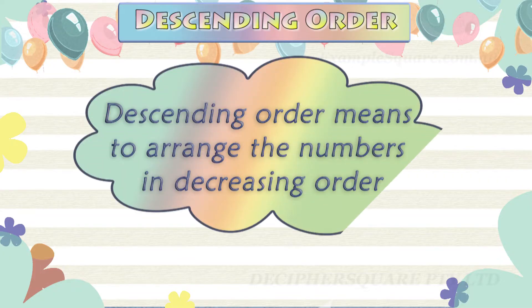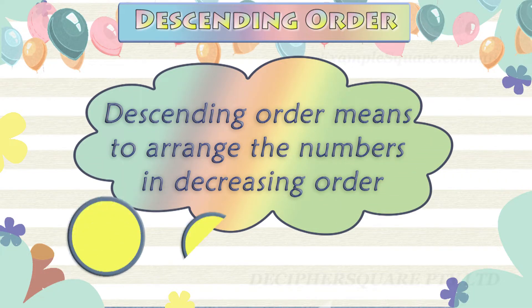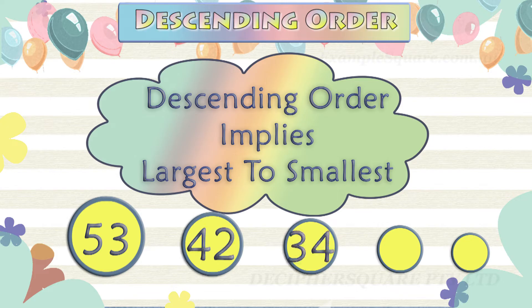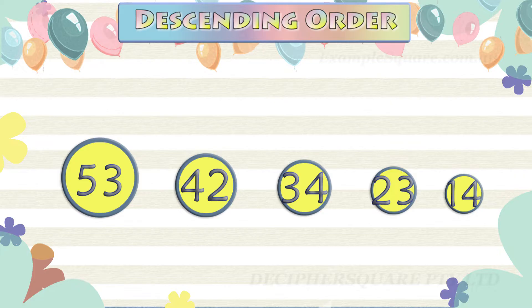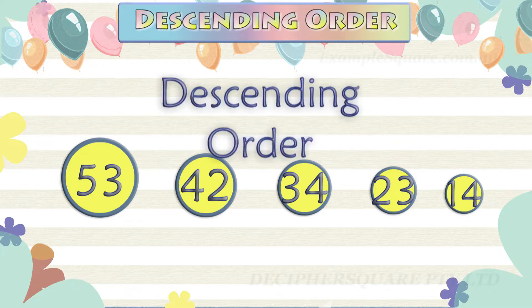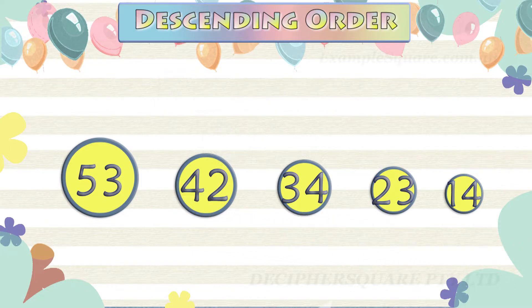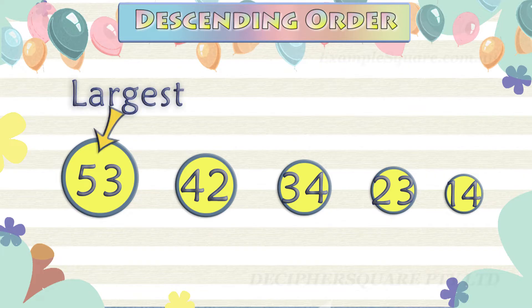Arranging numbers in a descending order means to arrange the numbers in decreasing order, that is from the largest to the smallest. When the numbers are arranged in descending order, the largest number comes first and the smallest number comes last.